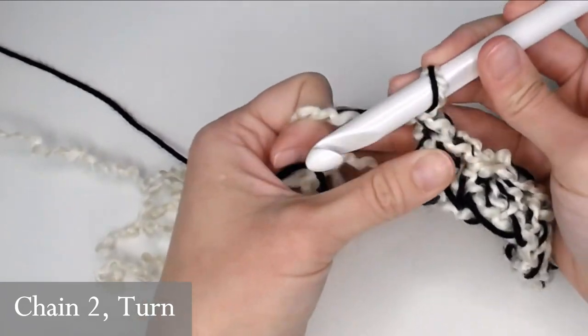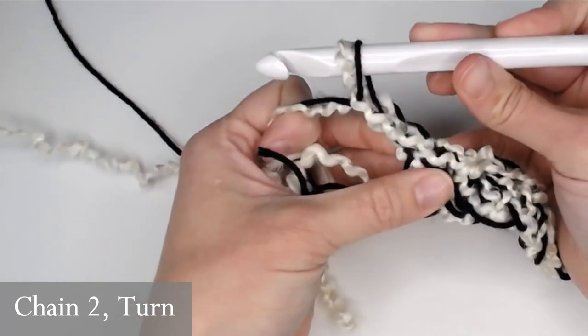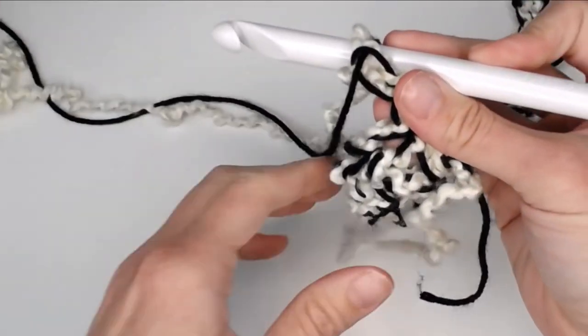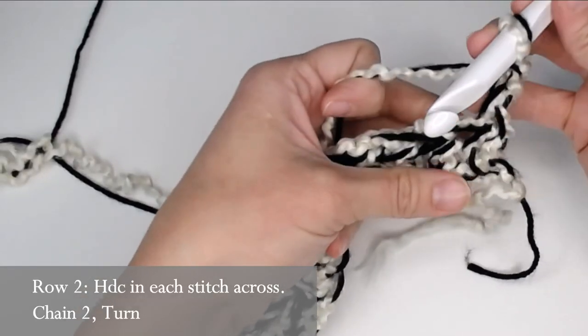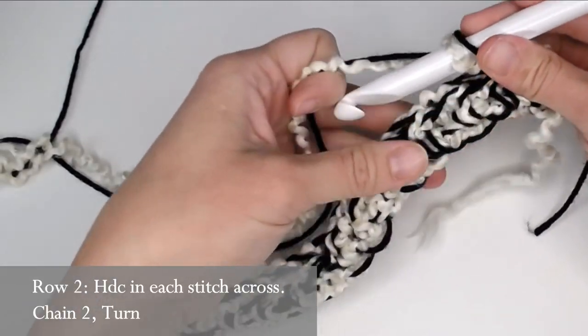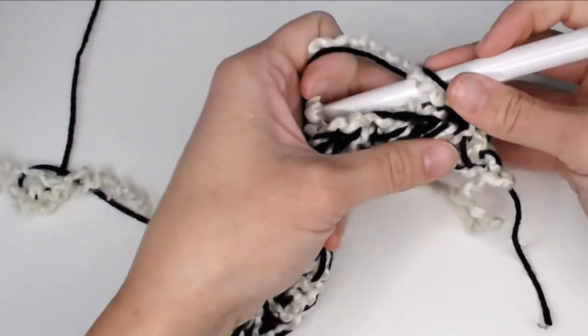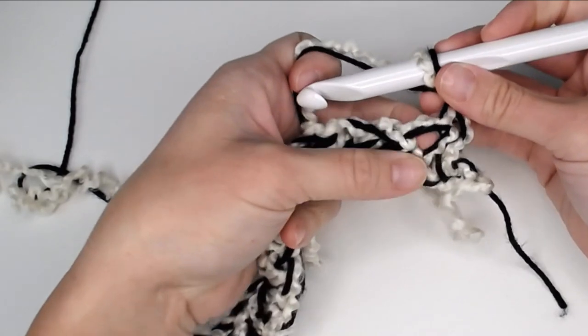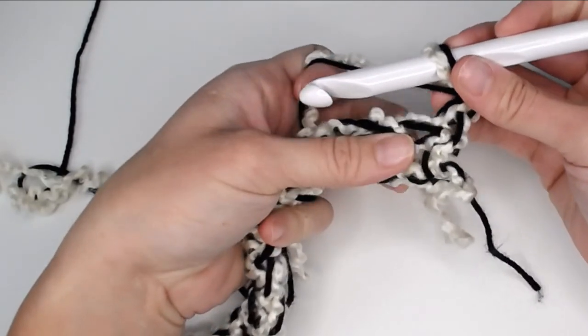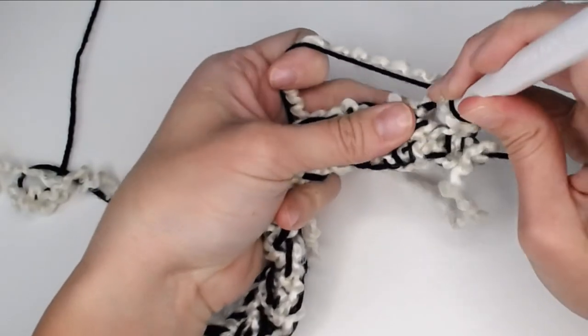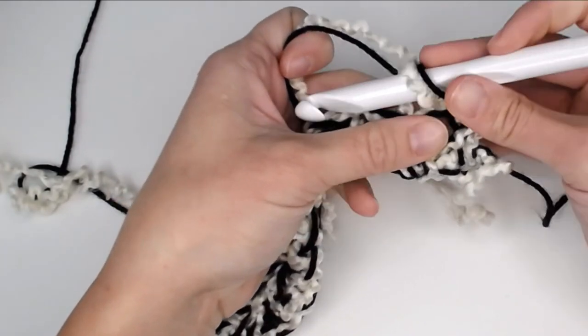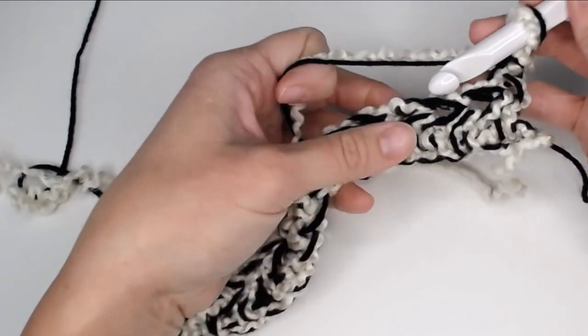We're going to chain two, one, two, turn our work, and then continue to put one half double crochet in each stitch all the way down. Now we are looking for these V-shape looks. Right there, see that hole on the top right there? That is our first stitch. Right here, that's our next stitch.